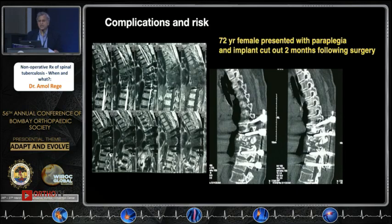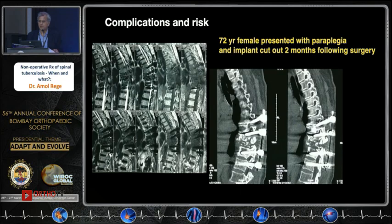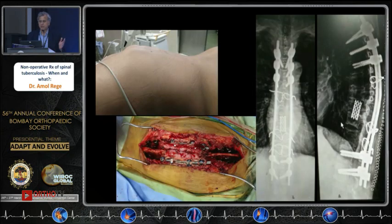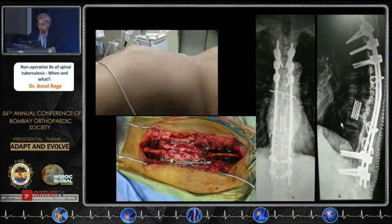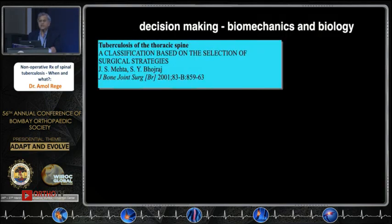There are complications and risks to be aware of. This is a case presented to us — operated elsewhere with inadequate stabilization; screws were placed into the diseased vertebra and it failed. So this surgery should not be taken lightly. We revised it by extending the fixation, addressing the anterior column, and also using sub-laminar wires along with the rod. In essence, decision-making depends on both biomechanics and biology — you need to study both.